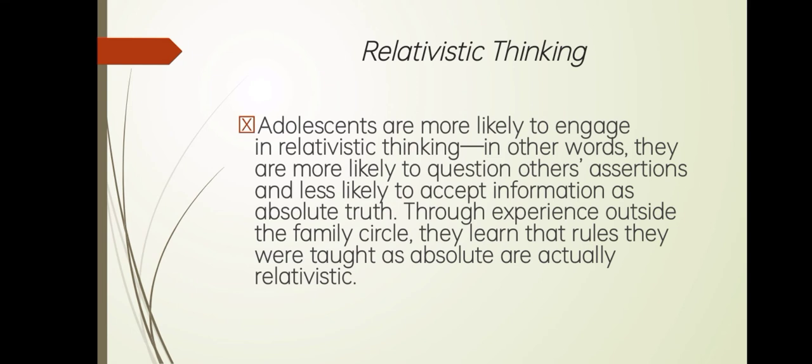Next is relativistic thinking. Adolescents are more likely to engage in relativistic thinking — in other words, they are more likely to question assertions and less likely to accept information as absolute truth. Through experiences outside the family circle, they learn that rules they were taught as absolute are actually relativistic. Relativism is the belief that reality and its cognition is relative, depending on the adopted perspective.